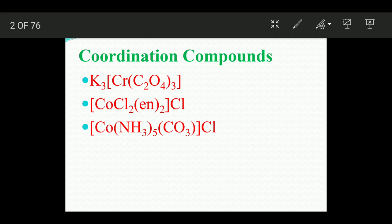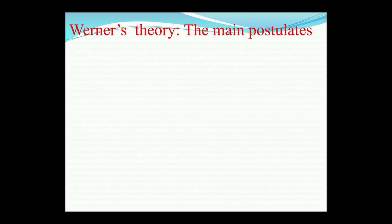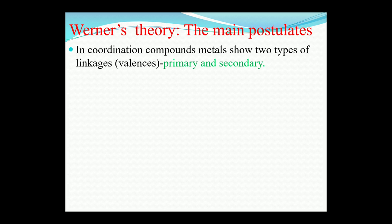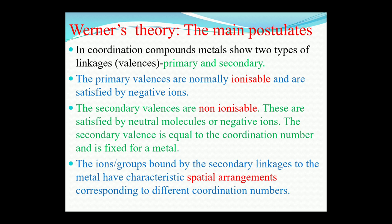Here are a few examples of coordination compounds you can see. First, we are going to discuss Werner's theory and its main postulates. I would like to request all students to take a snapshot so that you can read and make notes. The first postulate is that in a coordination compound, the metal shows two types of linkages — primary and secondary. This slide is self-explanatory, so write down these points, memorize them, and make your concepts clear.